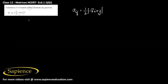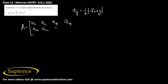A 3×4 matrix means the matrix A has 3 rows and 4 columns. So the elements are a11, a12, a13, a14, then a21, a22, a23, a24, then a31, a32, a33, and a34.